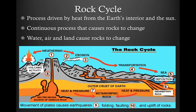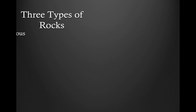Three things cause rocks to change: water, air, and land. Water causes weathering, which is a destructive force that breaks down rock. Air breaks down rock as well, and land can change rock through weathering, earthquakes, and similar forces. Sometimes these forces cause rocks to form new rocks; other times they cause rocks to break down. The rock cycle is a continuous process that is always going on.